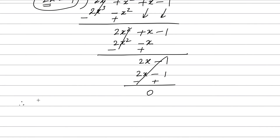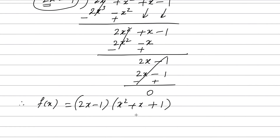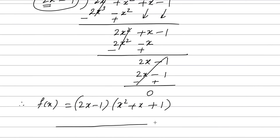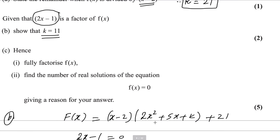Therefore, f(x) equals (2x minus 1)(x squared plus x plus 1). You cannot factorize the quadratic further, so this is the fully factorized form. First part of (c) is done.